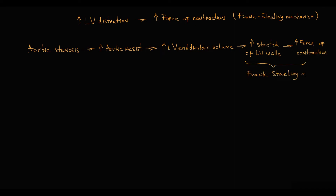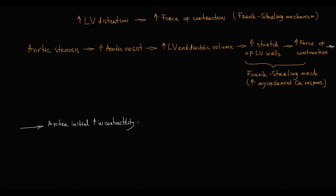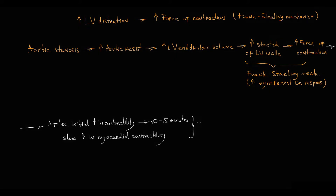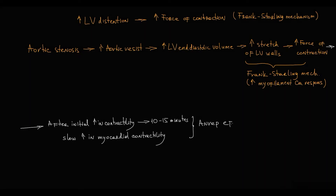The Frank-Starling mechanism is caused primarily by an increase in myofilament calcium responsiveness. But interestingly, right after this initial rise in contractility, over the next 10–15 minutes, myocardial contractility slowly continues to increase. This slow increase in contractility that occurs after the initial rise in force of contraction and lasts for over 10–15 minutes is called the Anrep effect, also called the slow force response.